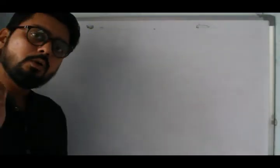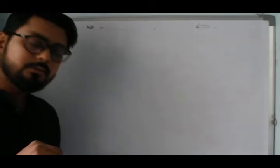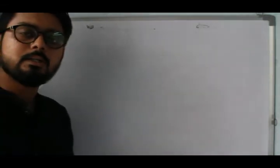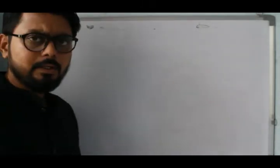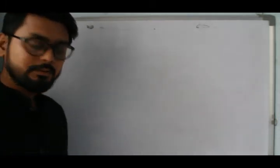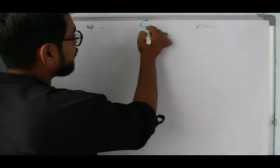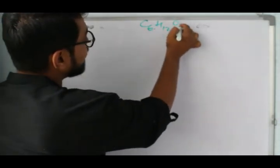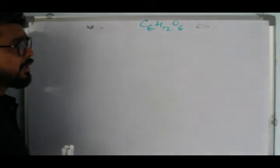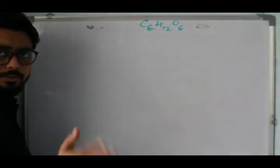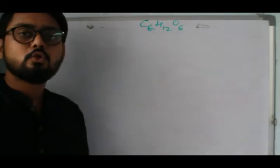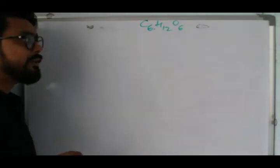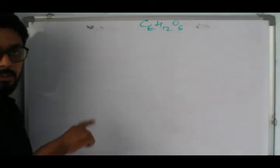Today we'll talk about the structure of fructose in the Fischer projection and how to convert it into the Haworth projection. You should know that glucose and fructose are isomers of each other, so they share the same molecular formula. Glucose was an aldehyde sugar, and fructose is a ketose sugar.